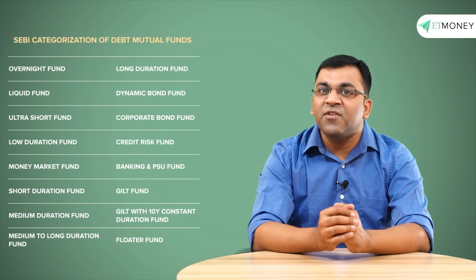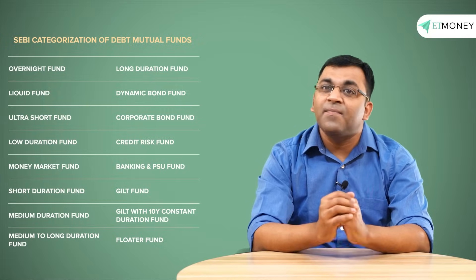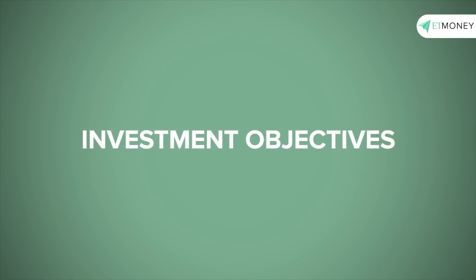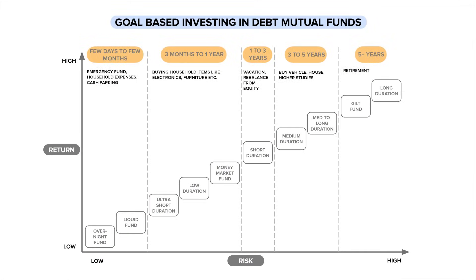Let's start with the first area that needs our consideration: investment objectives. An investment objective is simply the goal or reason for which one invests in a debt fund. Most mutual fund companies would show an investment chart like what you can see on the screen. This chart does make sense to an extent, especially on the application of overnight, liquid, ultra short term, low duration and money market funds — these funds carry a higher level of predictability in returns and high safety of capital, making them perfect for short-term parking of money and cash management activities by corporates.